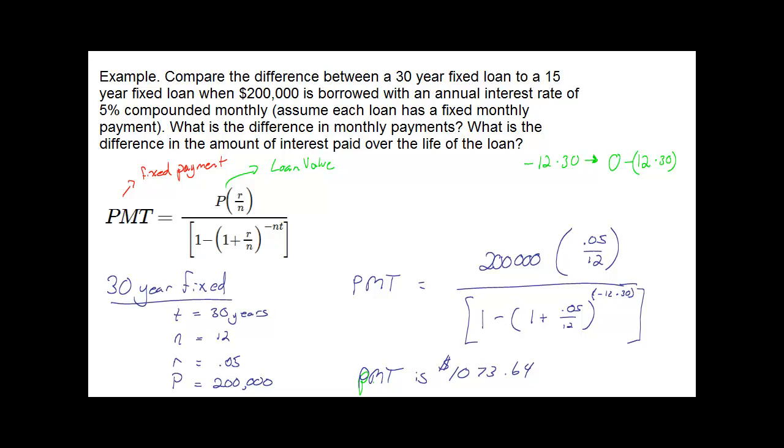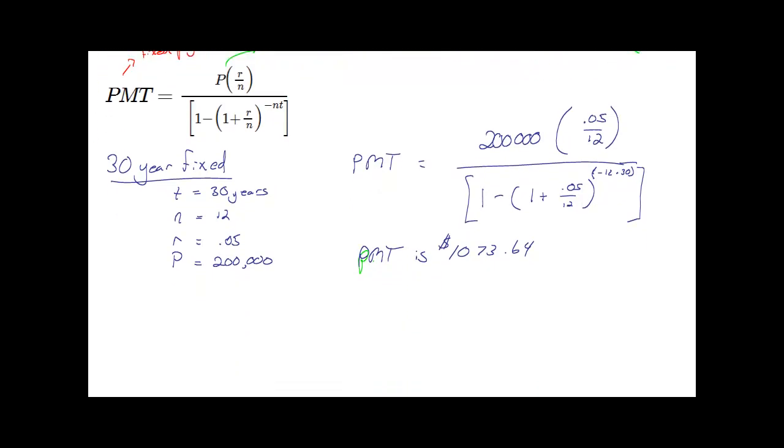For the 15-year case, we'll do a very similar scenario, but the only thing that changes is where we had T equal to 30, that's now T equals 15. Let's look at what happens to my payments for the 15-year fixed.